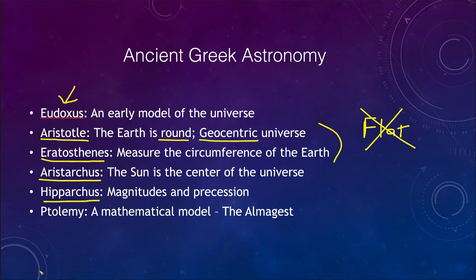Hipparchus gives us a couple of things that we still use today: magnitudes, a way of measuring the brightnesses of the stars, and the idea of precession, the way the earth's tilt changes over time. Then finally that all culminated with Ptolemy in the second century. He gave us a mathematical model in his great work called the Almagest that was a way of explaining how the planets moved and being able to predict their positions.